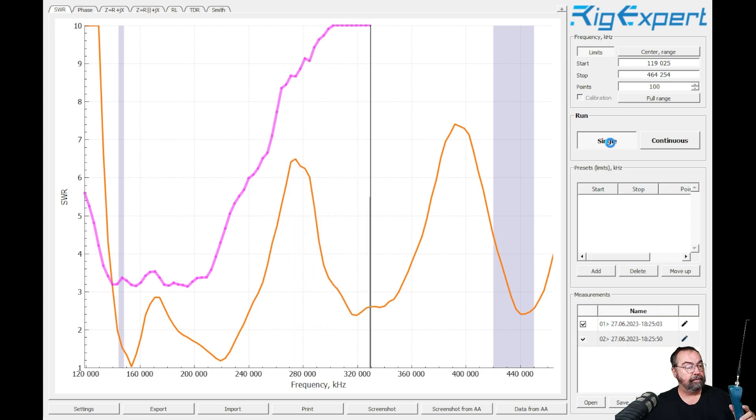About 3.4 at two meters and looking really good at 70 centimeters all the way down to 1.5 or so to one at the higher end of the 70 centimeter band. So not bad. All right.